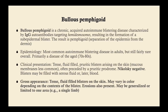Bullous pemphigoid is a chronic acquired autoimmune blistering disease, similar to pemphigus vulgaris in that respect. It's also characterized by IgG autoantibodies; however, these autoantibodies target the hemidesmosomes — which attach the stratum basale cells to the basement membrane — resulting in the formation of a subepidermal blister. The epidermis will be intact with no acanthocytes, but there will be separation at the basement membrane.